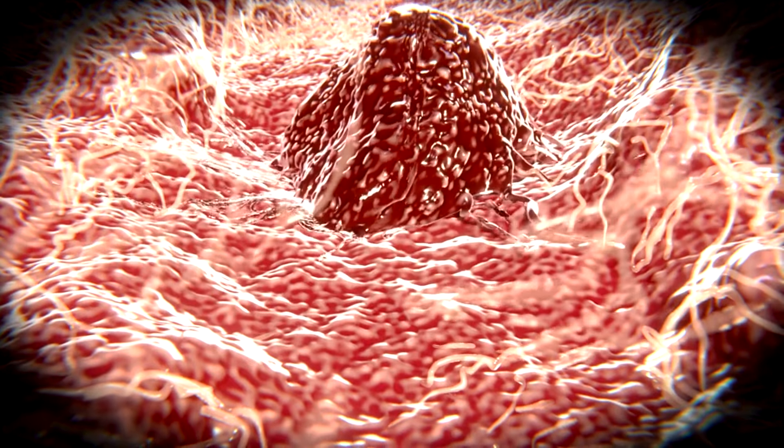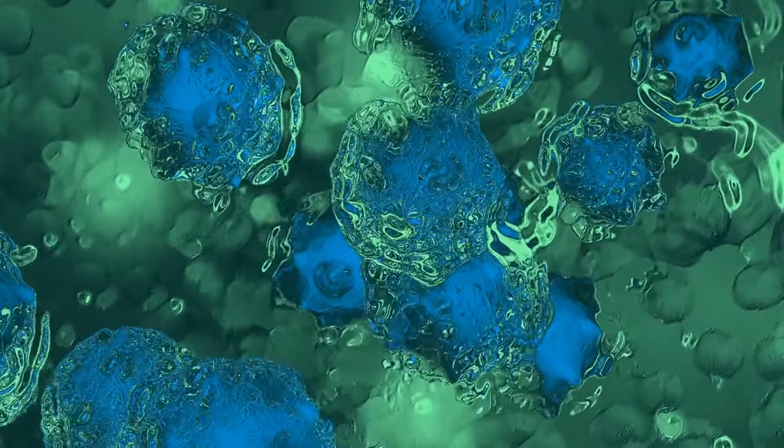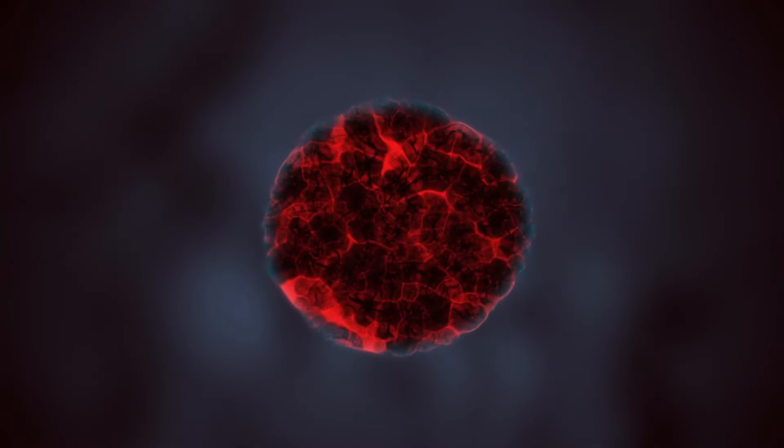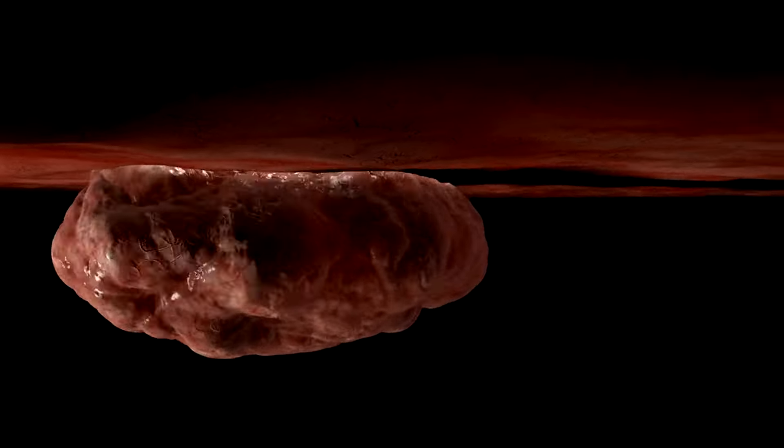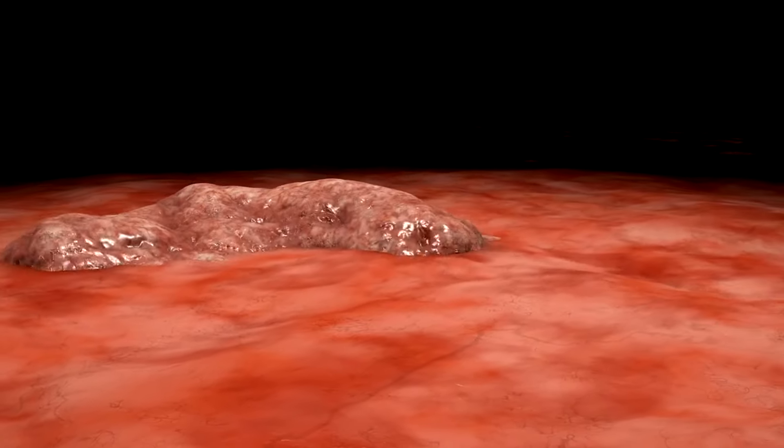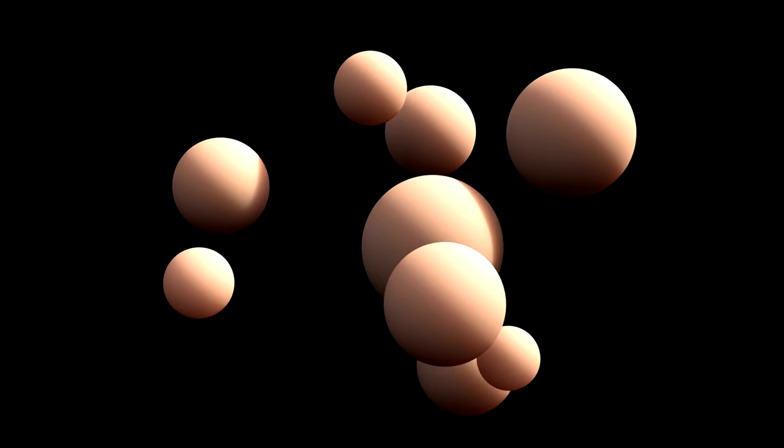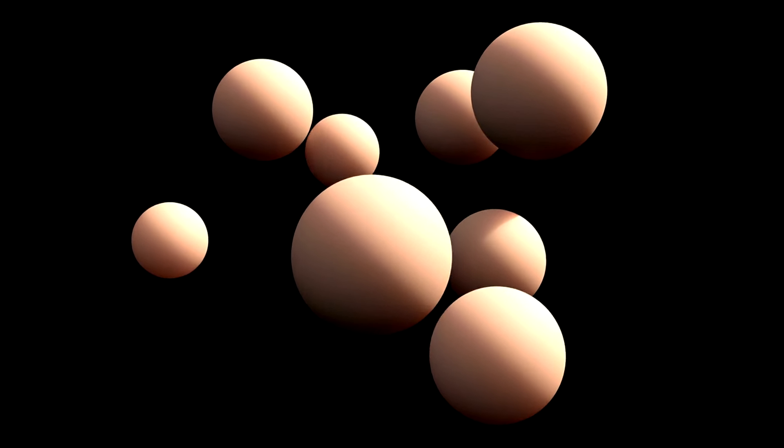Why do cancer cells do this? Well, glycolysis allows cancer cells to produce energy quickly, even if it's less efficient. This rapid energy production supports their fast growth and division. Additionally, the byproducts of glycolysis, such as lactate, can be used to build new cellular components, further aiding in the proliferation of cancer cells. This metabolic reprogramming provides energy and the building blocks needed for rapid cell division.